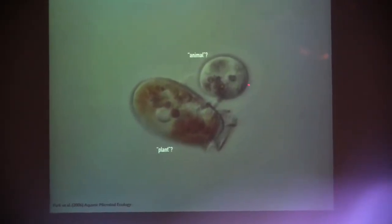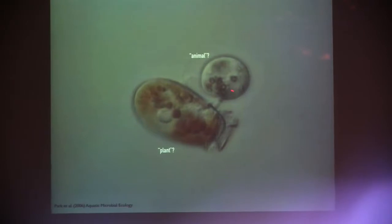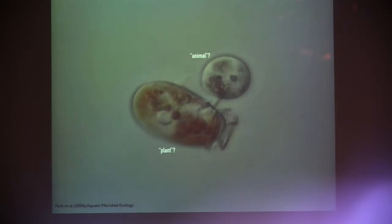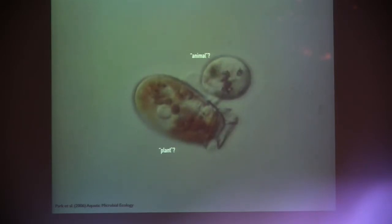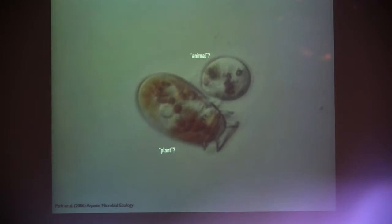And this is a heterotrophic ciliate that is known to consume other organisms. But if I press play on this video, you can see that the photosynthetic plant animal has stuck a tube into the animal, and it's basically sucking out its insides. So this is what mixotrophy is. This is a video from Park, published in 2006.